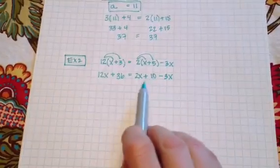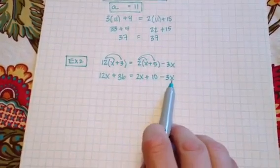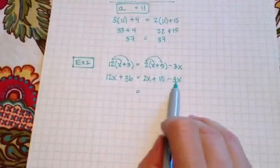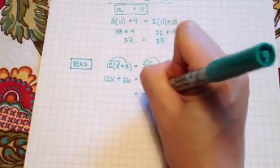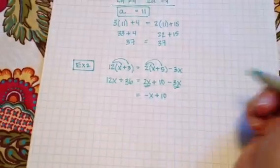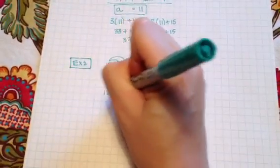Now on this side since I have a 2x and a minus 3x I can combine like terms, so 2x take away 3x is negative x. I'm just putting these two terms together and on this side I still have 12x plus 36.